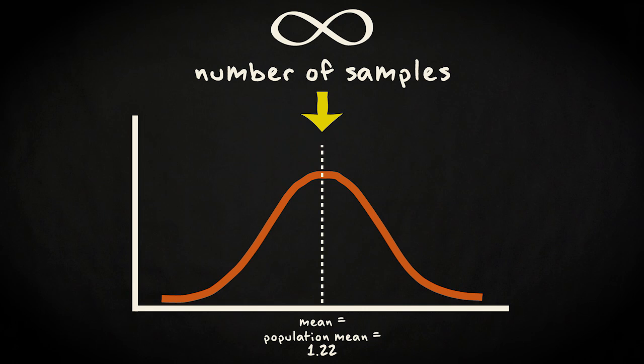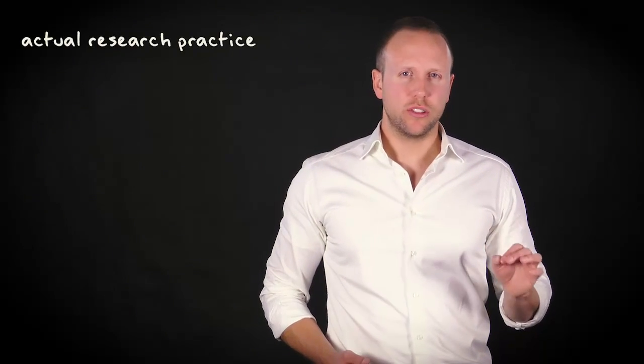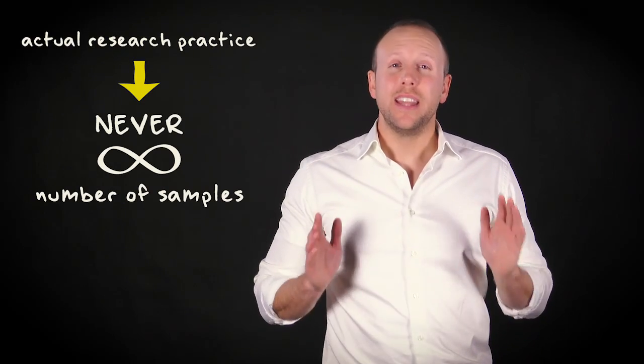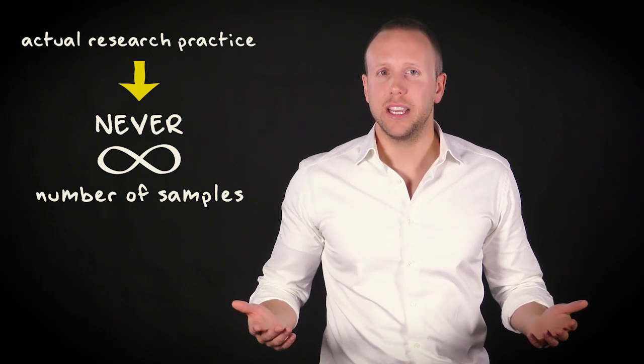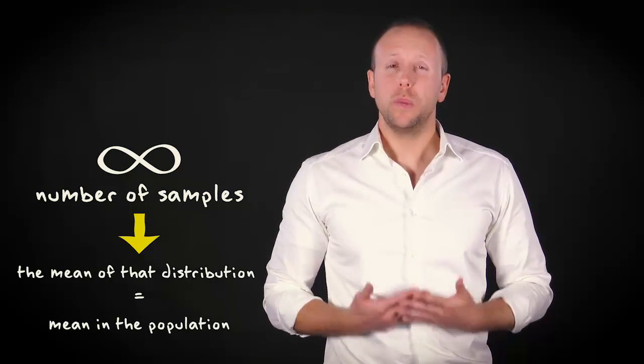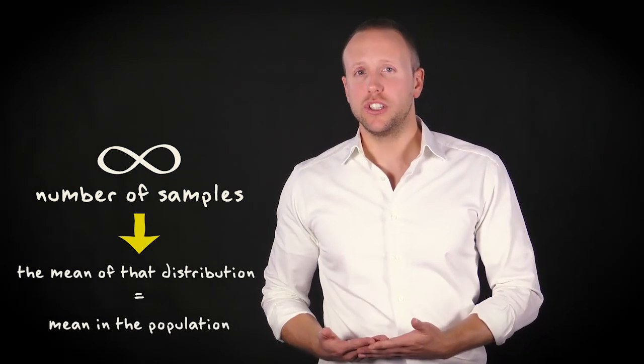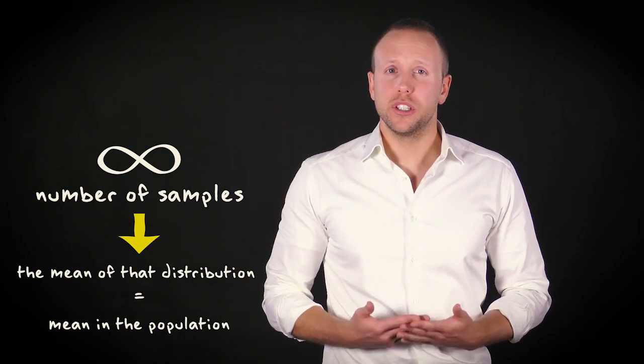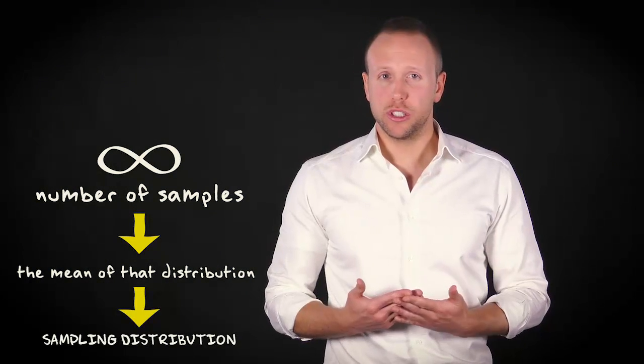We call this distribution the sampling distribution of the sample mean. It is a distribution that you get if you draw an infinite number of samples from your population, and compute the mean of all the collected sample means. For now, you need to realize that in the actual research practice, you will never collect an infinite number of samples from a certain population. However, it is important that you understand that if you would do that, the mean of the distribution would be equal to the mean in the population, and that we would call this distribution the sampling distribution of the sample mean.